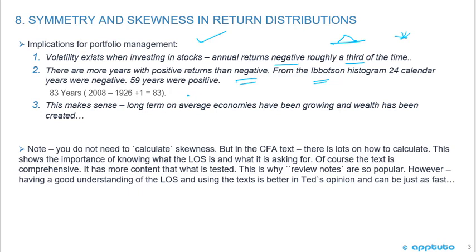That data ran from 1926 to 2008 — so 2008 minus 1926 plus one gives us 83 years: 59 positive, 24 negative. This makes sense because long-term on average, economies have been growing and wealth has been created. Long-term we've had more positive years, but there are the negative years. There are trends and cycles in the market.